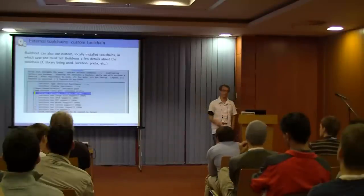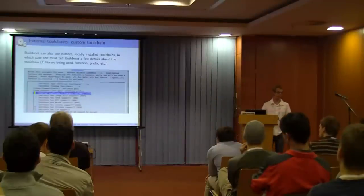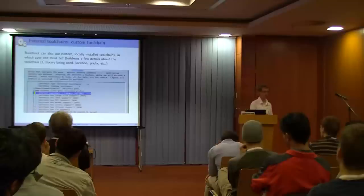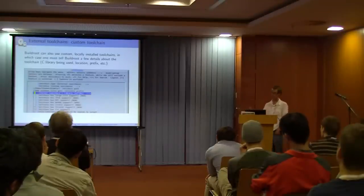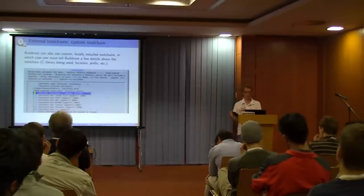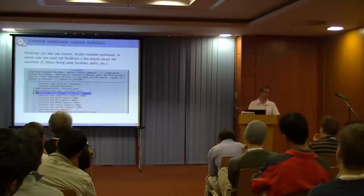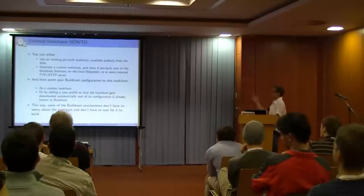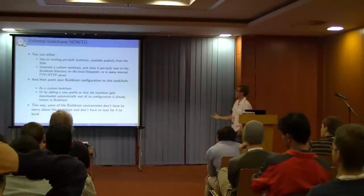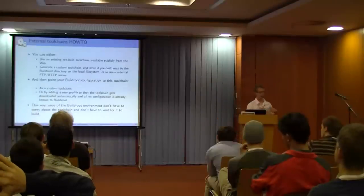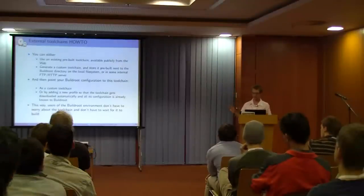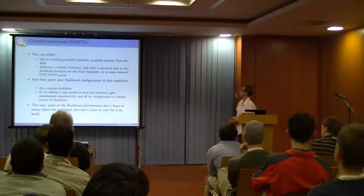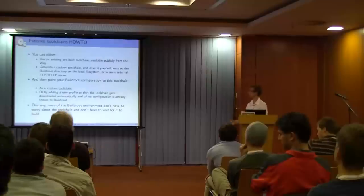The toolchain you use must be a pure toolchain — one containing only the compiler, linker, binutils, C library, and optionally a debugger. Linaro's prebuilt toolchains, for example, are not pure — they include Python, Perl, and other libraries, so BuildRoot cannot use them. You can build your own toolchain and store it on an internal HTTP server so colleagues can directly use a build configuration that references it, either as a custom toolchain or a new profile.